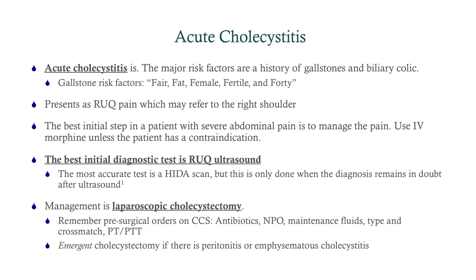Cholecystitis presents as right upper quadrant pain, which may refer to the right shoulder — in fact, a lot of biliary tract disorders can refer to the right shoulder. The best initial step is to manage the pain with IV morphine unless contraindicated. The best initial diagnostic test is a right upper quadrant ultrasound, which will confirm the diagnosis. However, the most accurate test is a HIDA scan, which we save for cases where the diagnosis remains in doubt after the ultrasound.